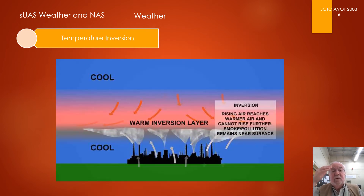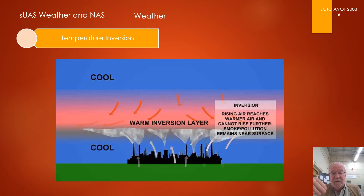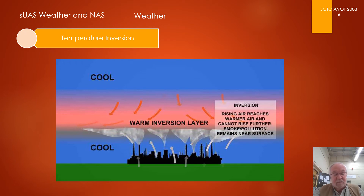A word about temperature inversion: this is simply a layer of atmosphere in which temperature increases with altitude. We've got cold air underneath, and as warm air rises it gets warmer. Inversions commonly occur within the lowest few thousand feet above the ground due to nighttime radiational cooling or along frontal zones. Cold air gets trapped in a valley or around a city, and strong wind shears often occur across temperature inversion layers, which can generate turbulence.